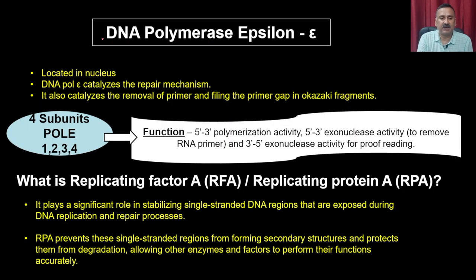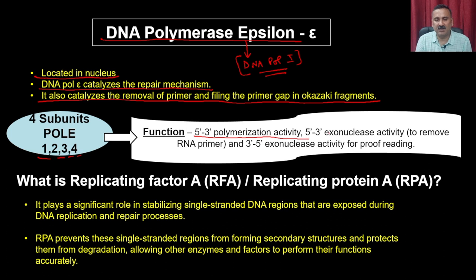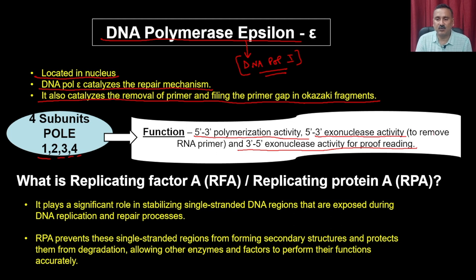DNA polymerase epsilon is localized in the nucleus and catalyzes repair mechanisms. It also catalyzes the removal of primers and filling of the primer gap in Okazaki fragments — similar to the role of DNA Pol I in the prokaryotic system. It has 4 subunits and possesses 5-prime to 3-prime polymerase activity, 5-prime to 3-prime exonuclease activity for RNA primer removal, and 3-prime to 5-prime exonuclease activity for proofreading.